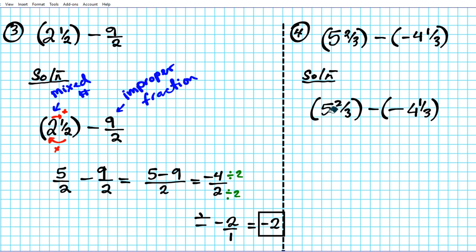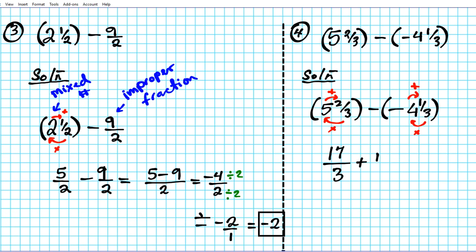To convert five and two-thirds to an improper fraction, you multiply three by five and add two. Three times five is fifteen, add two, you have seventeen over three. Then minus and minus: minus times minus, when you multiply identical signs it becomes a plus. For four and one-third: multiply three and four and add one. Three times four is twelve, twelve plus one is thirteen, so thirteen over three.